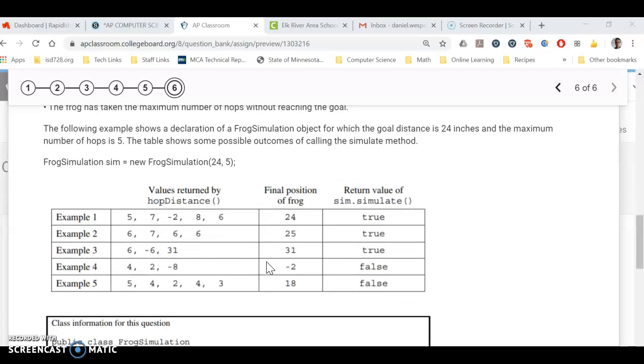They give a bunch of good examples here. This example, you have a length of 24 and a max of five hops. In example one, they make it there in five hops. Example two, they make it there in four and can stop. Example three, you made it there in only three hops.